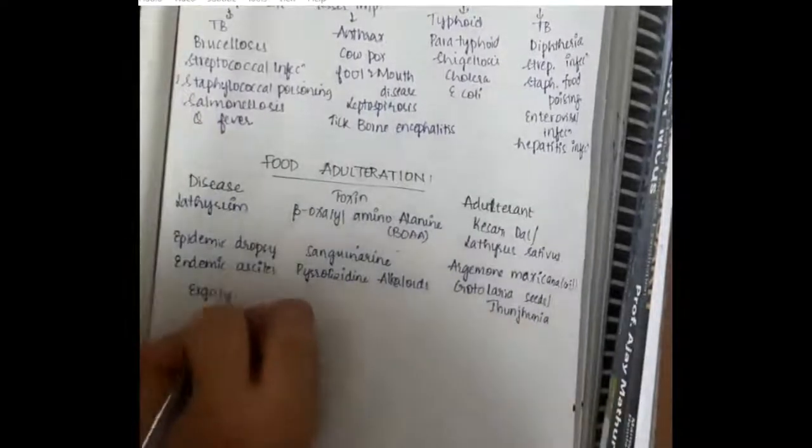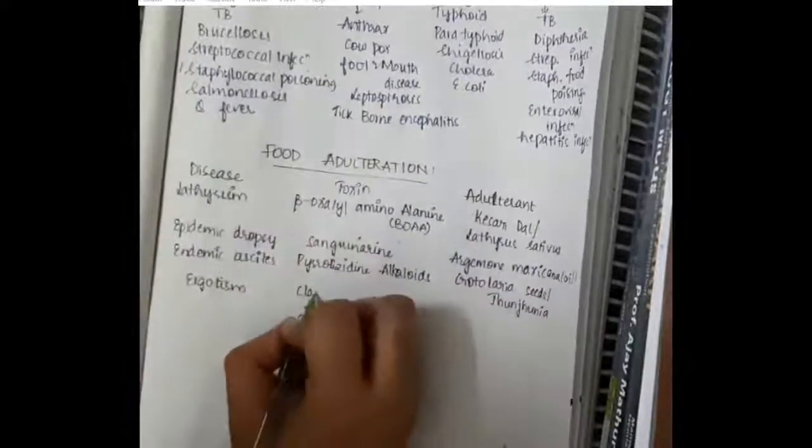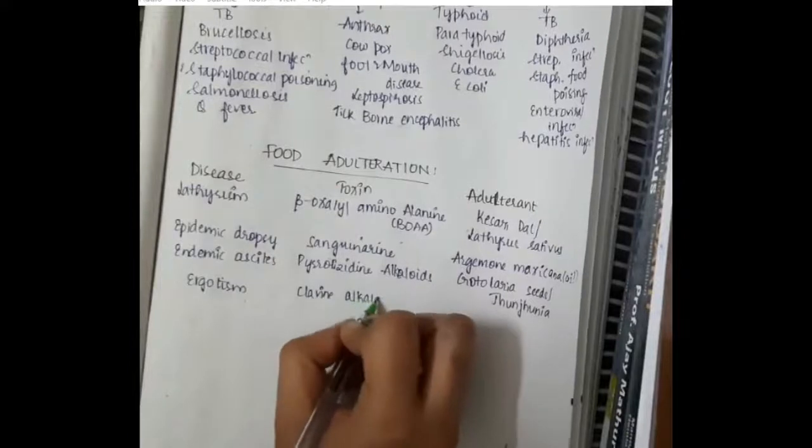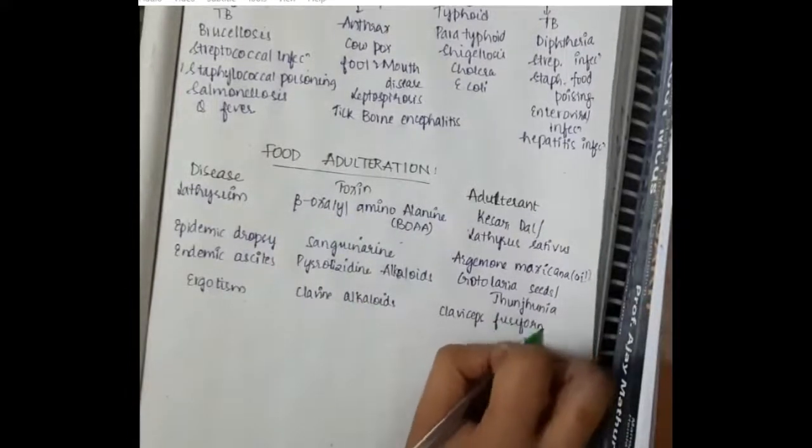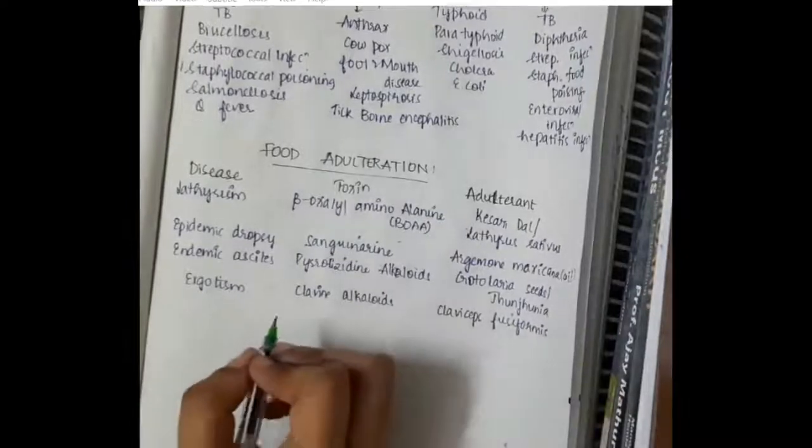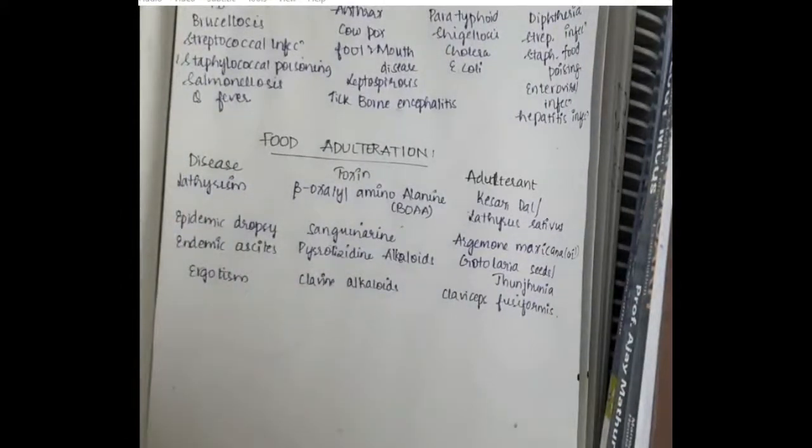For the disease ergotism, toxin is clavine alkaloids whereas adulterant is claviceps fusiformis. These are the diseases and food adulterants.